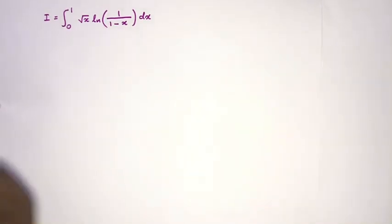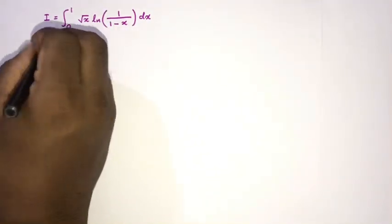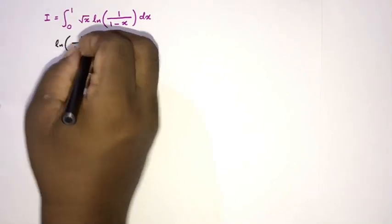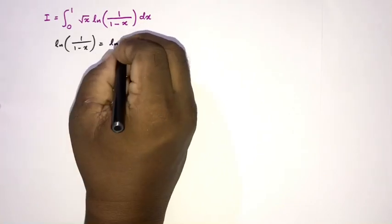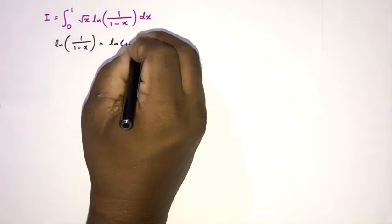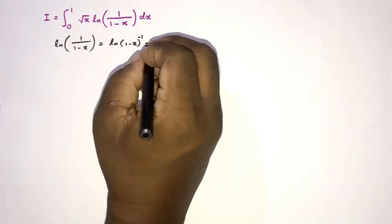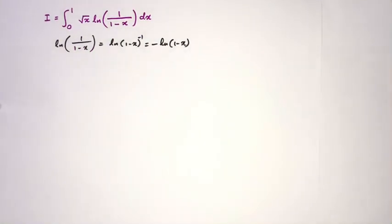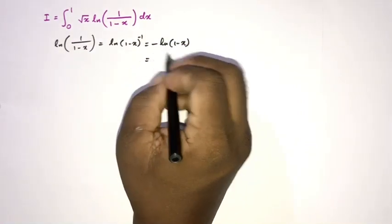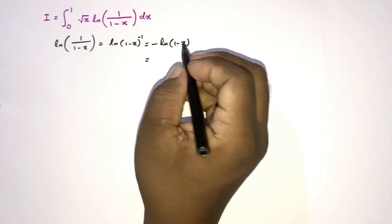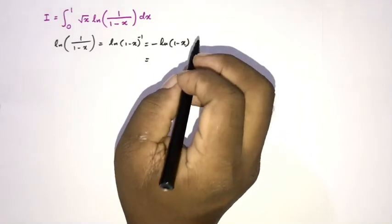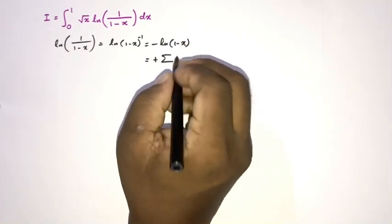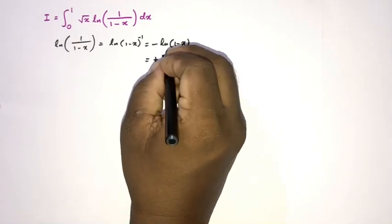I am going to take the Taylor series of the natural log of 1 over (1 minus x). By the property of natural log, we know this equals the natural log of (1 minus x) to the minus 1, which equals minus times the natural log of (1 minus x). Then using the well-known Taylor series, we get the sum from n equals 1 to infinity of x to the n over n.